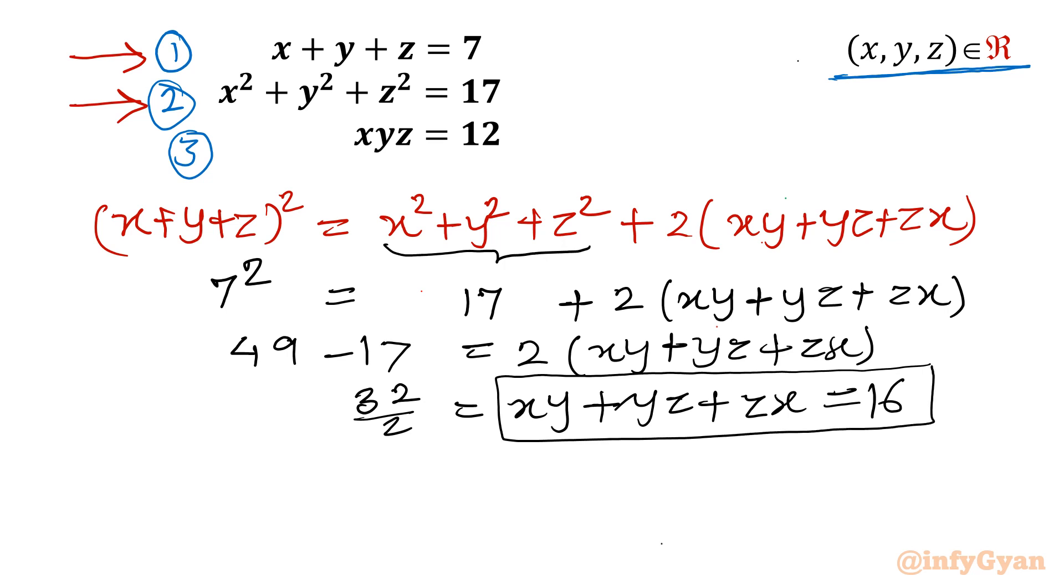Now I will frame or I will write one new system of equations. You can see x plus y plus z will be there, it is 7. Then I will be writing xy plus yz plus zx which I will write 16. Just calculated. xyz equal to 12. Let me call these 4, 5 and 6.